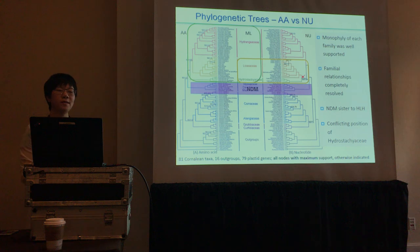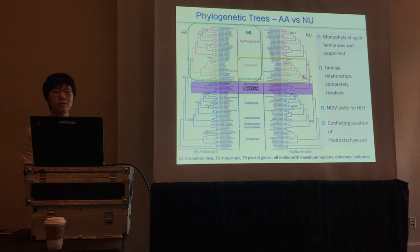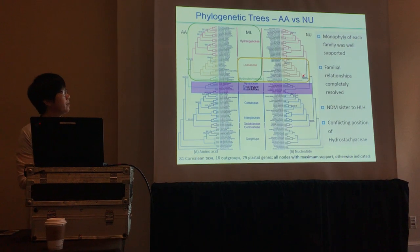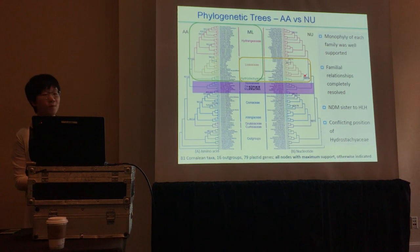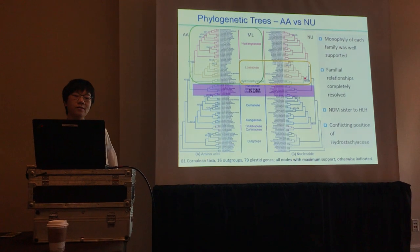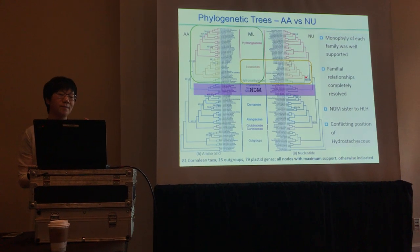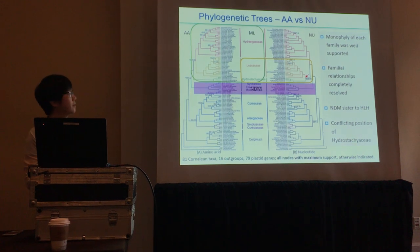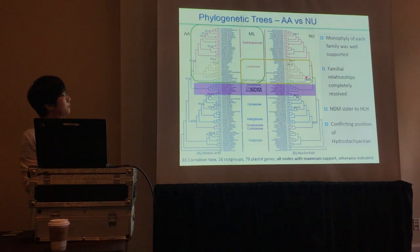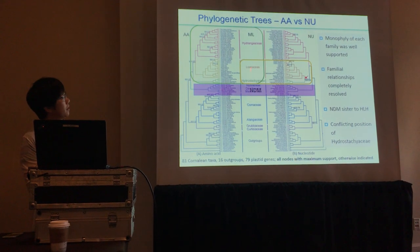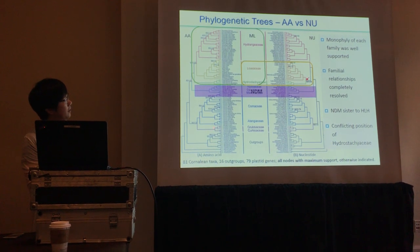The phylogenetic relationships of the families within the order are well resolved and strongly supported, almost identical to the previous seven-gene plastid DNA-based phylogeny. Surprisingly, the Nyssoid-Mastixioid clade groups with the Hydrangeaceae, Loasaceae, and Hydrostachyaceae clades, rather than with the traditional cornoid clades.